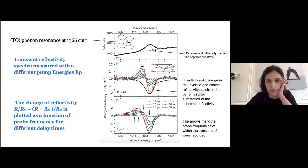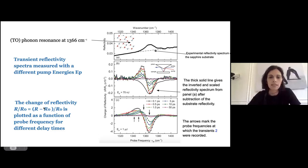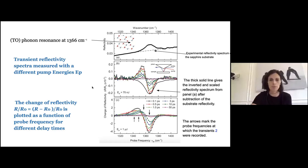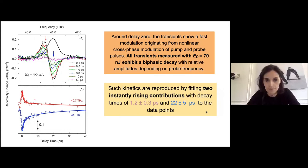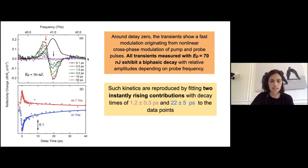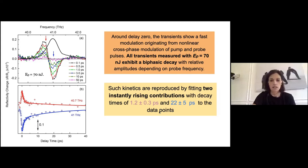In bulk, a typical reflectivity spectrum would show a flat baseline, then a rise at the TO phonon frequency ω_TO, a peak, a drop at ω_LO, and then recovery — the reststrahlen band. Here they had a multilayer system. They were testing the pump-and-probe dynamics of the TO phonon by changing the pump-probe energy and frequency. What was surprising was that around a delay of zero there was a fast modulation, and fitting this red shift required two instantaneously rising contributions: one with a decay time of 1.2 picoseconds and another of 22 picoseconds.